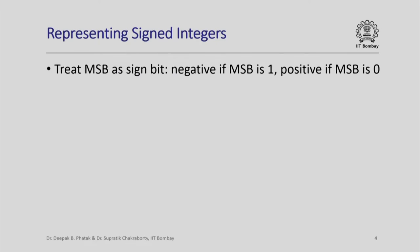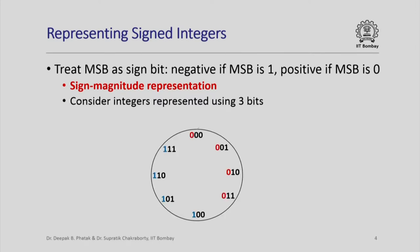For signed integers we have already seen that we could treat the most significant bit as the sign bit — if the MSB is 1 then we treat the integer as negative, and if the MSB is 0 we treat it as positive. This representation is also called the signed magnitude representation. We have seen similar examples earlier where integers are represented using 3 bits arranged along a circle.